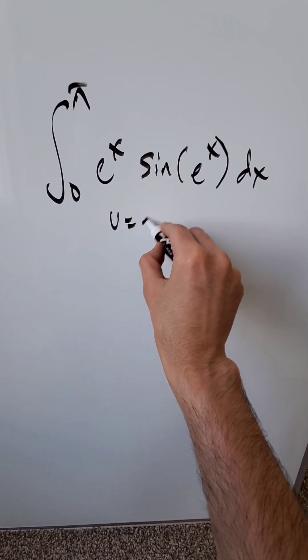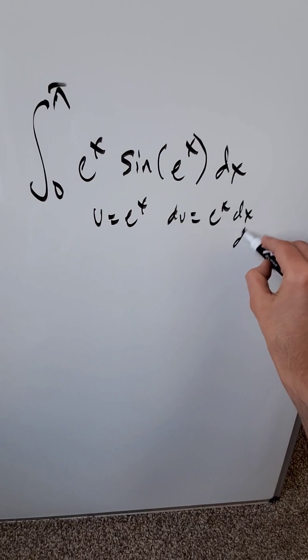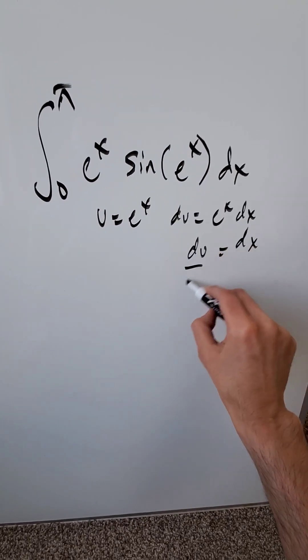This is a composite function, so think about u-substitution. Let u equal e to the x, then du equals e to the x dx, and dx equals du divided by e to the x.